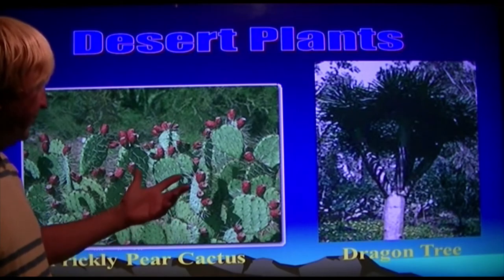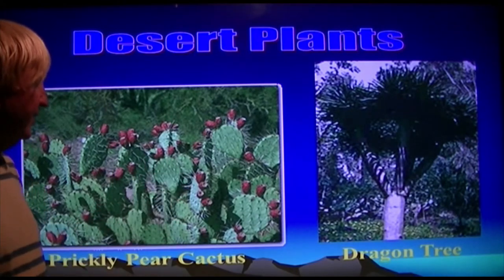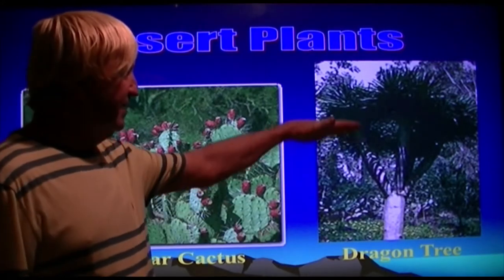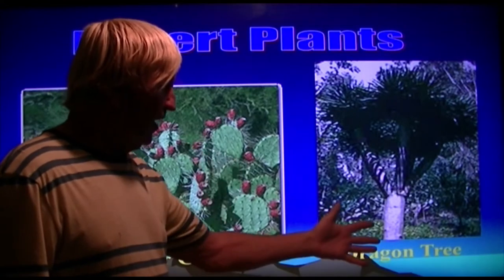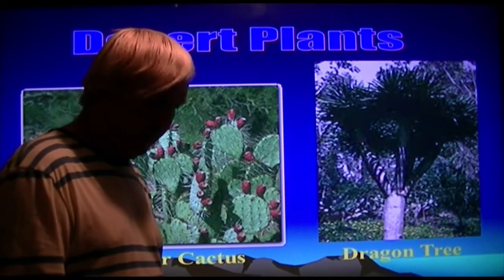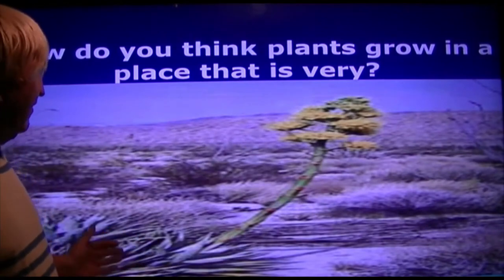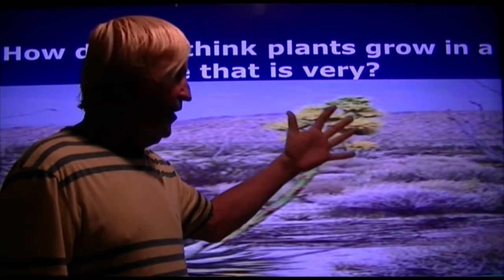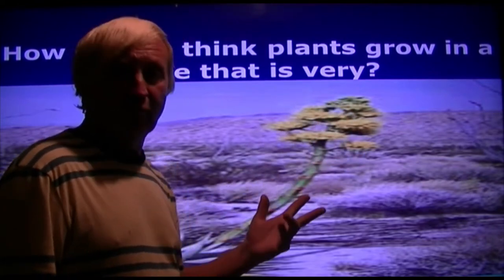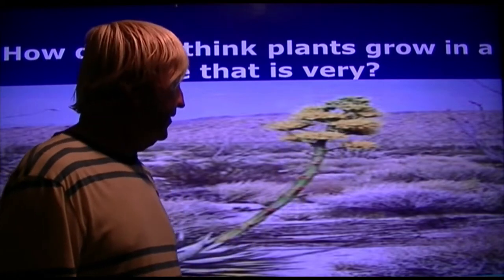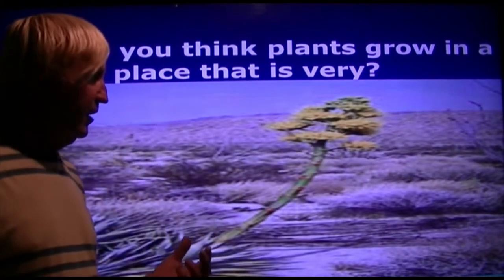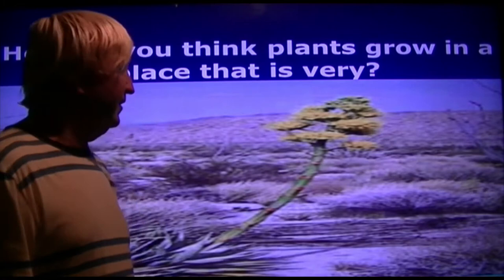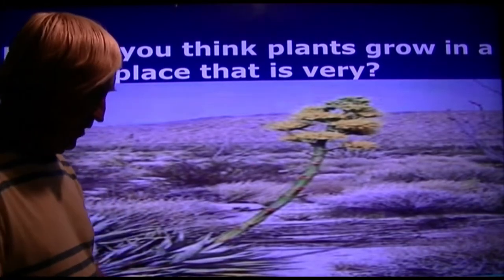Desert plants vary. There are prickly pear cacti with lots of thorns and neat fruit that desert tortoises love. Dragon trees keep small animals from consuming their leaf structure because they have to climb up. Some plants have white flowers that bloom only at night — this serves two purposes: conserving moisture during the daytime, and because they're light-colored, they attract evening pollinators, which in this case are bats.